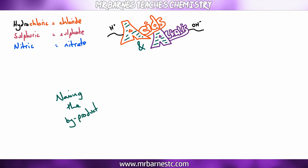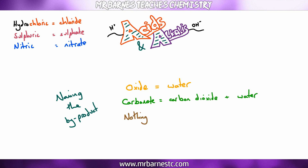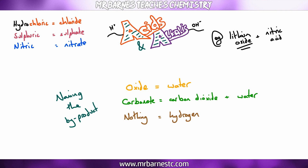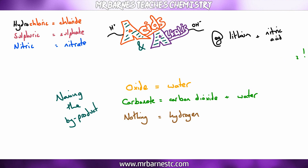You also need to know the byproduct. Three situations: if you have an oxide, water is produced as the byproduct. If you have a carbonate, you get carbon dioxide and water. If there's neither an oxide nor a carbonate, hydrogen is always given off.